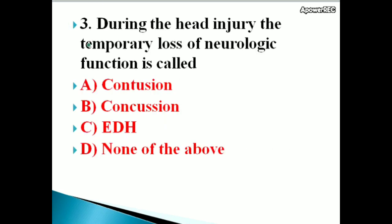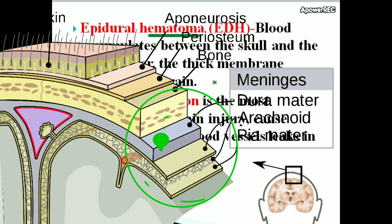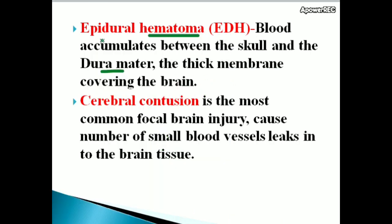Next question: During head injury, the temporary loss of neurologic function is called — options: concussion, epidural hematoma, none of the above. The correct answer is concussion. Epidural hematoma is when blood accumulates between the skull and the dura mater, the thick membrane covering the brain.